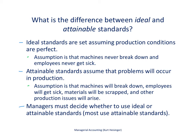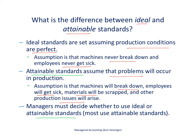There is a difference between ideal and attainable standards. Ideal standards are set assuming that everything is perfect — production conditions are perfect, machines never break down, employees never get sick, and we never have any issues. That isn't very reasonable. Attainable standards, by contrast, assume that problems do occur: machines will break down, employees will get sick, and other production issues will crop up. We need to build those potential issues into the standard. Most companies prefer to use attainable standards because they are much more realistic and achievable than ideal standards.